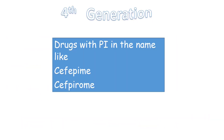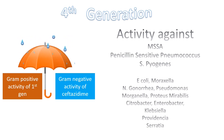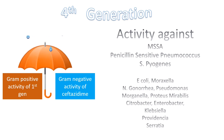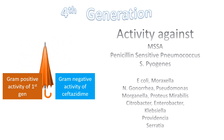Now let's talk about the fourth generation cephalosporins. Drugs with 'pi' in the name like Cefepime and Cefpirome are considered to be fourth generation cephalosporins. The in vitro activity of fourth generation cephalosporins resembles that of Cephalexin of the first generation and Ceftazidime of the third generation, with effectiveness against MSSA, Streptococcus pyogenes, penicillin-sensitive Streptococcus pneumoniae outside the CSF, and E. coli.